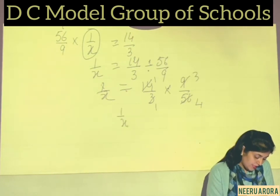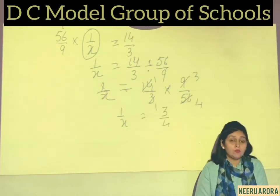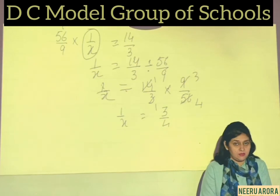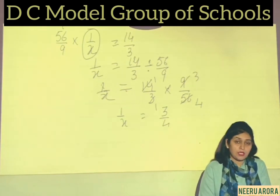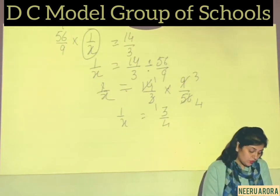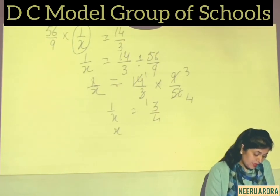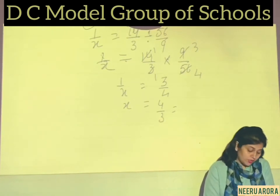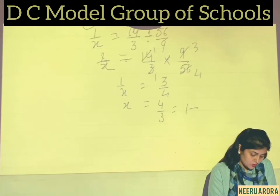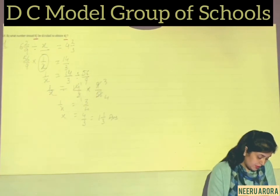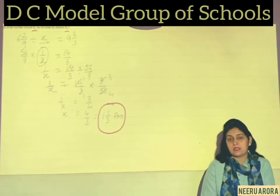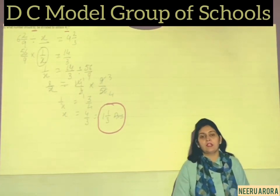So we have 1/x = 3/4. To find x, we reciprocate both sides: x = 4/3. This is an improper fraction, which converts to the mixed fraction 1 1/3. So the number by which 6 2/9 should be divided to obtain 4 2/3 is 1 1/3. I hope it is clear to you. Thank you and have a nice day.